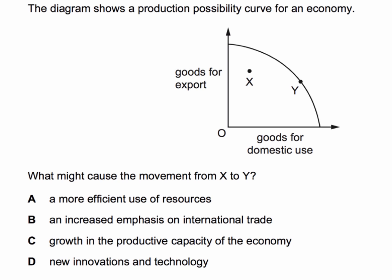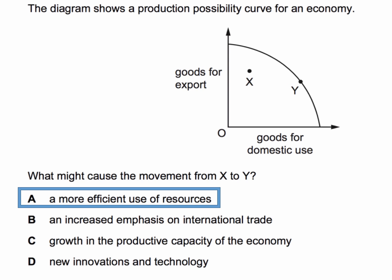Okay, so what did you get for this question? Well, the key thing is we're talking about the movement from x to y — a movement from within the production possibility frontier, from within the PPF to a point y which lies on the PPF. What might cause this movement? The correct answer is a more efficient use of resources. Points that lie inside the PPF represent, to an extent, an inefficient use or allocation of scarce resources. We can do better by moving to the curve.